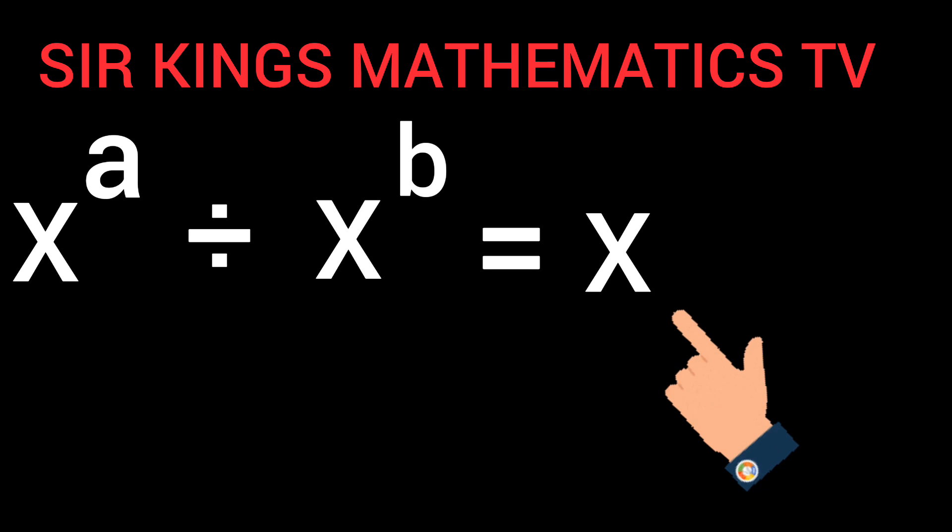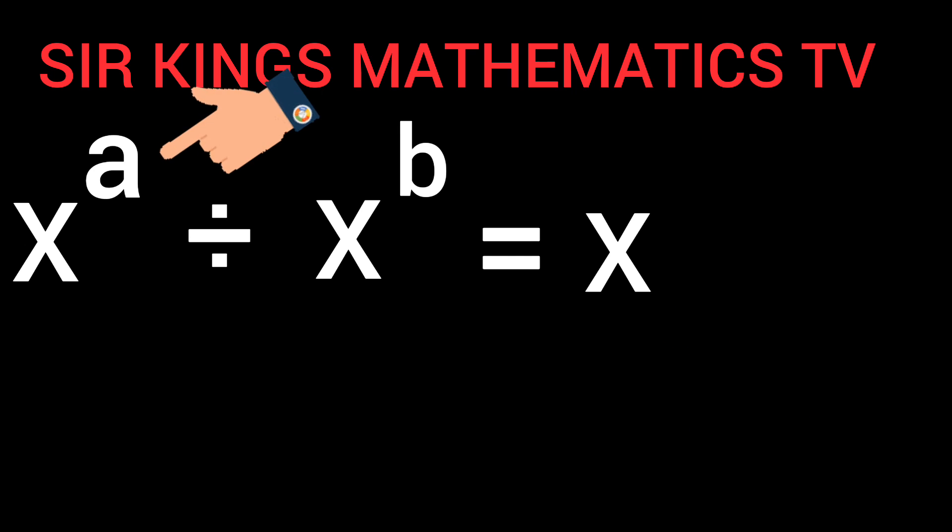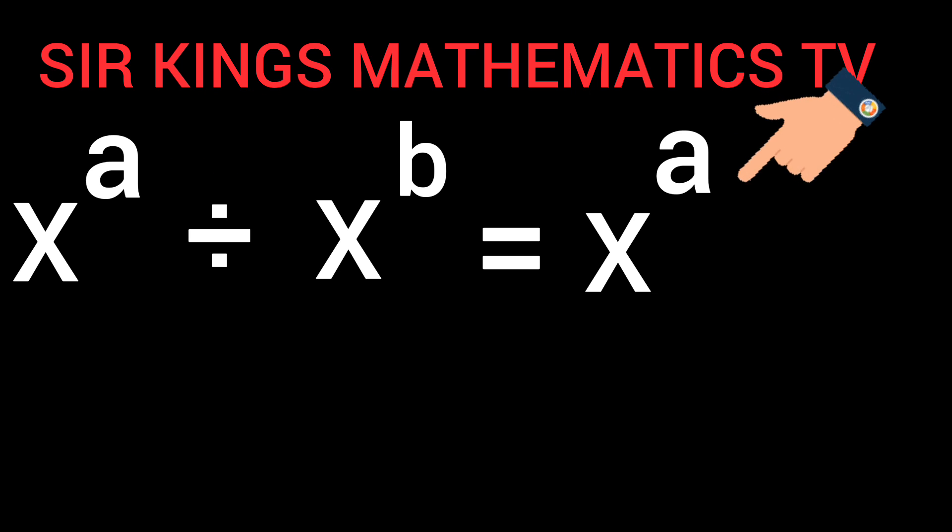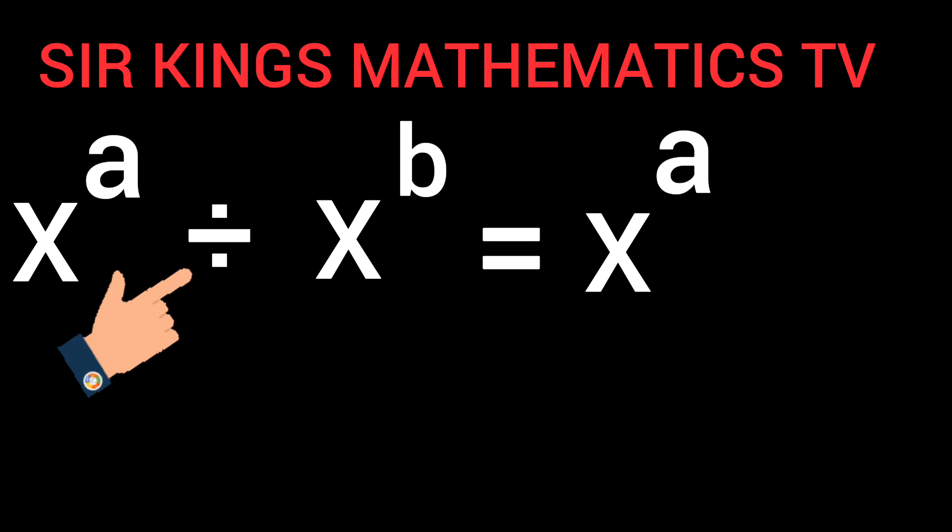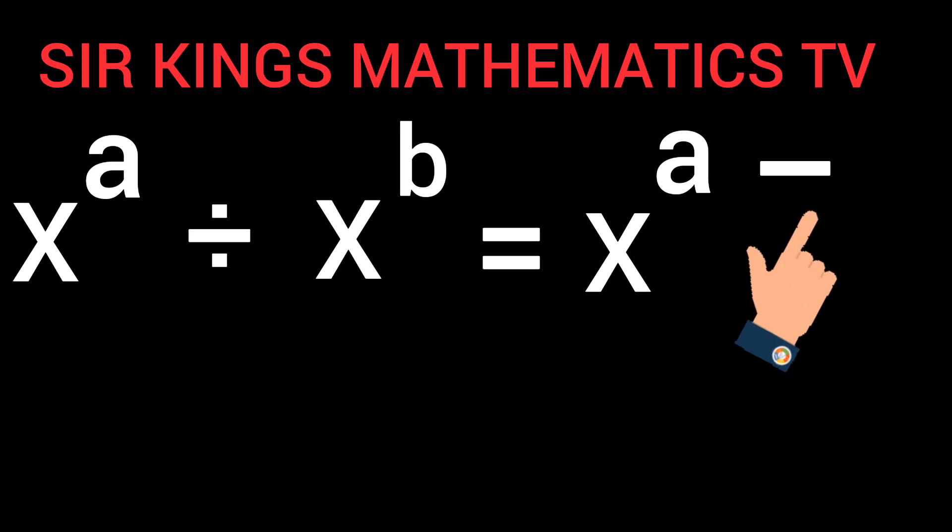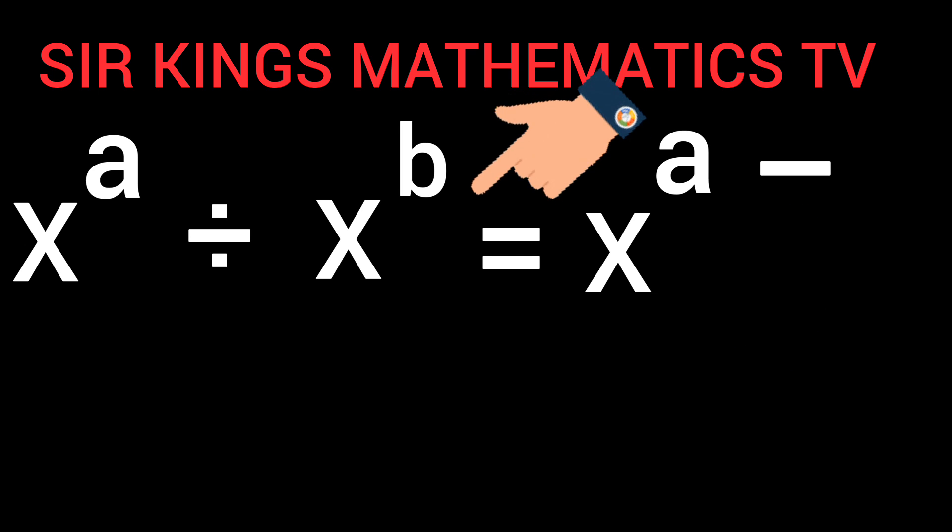Write it down. This A is known as the power. Put it here. This divide sign will change to minus sign. Write it here. This B is also known as the power. Write it here.